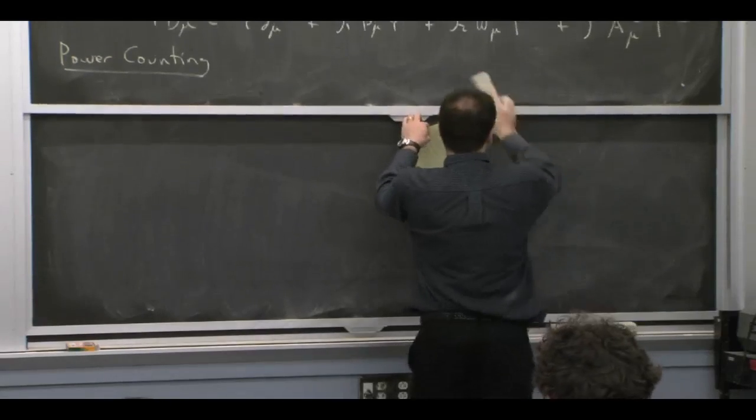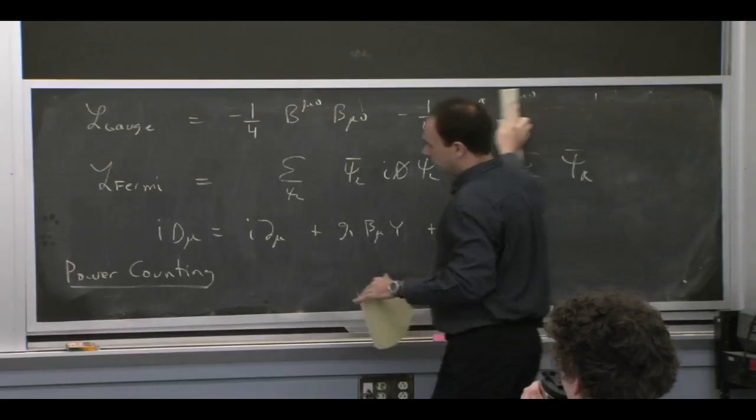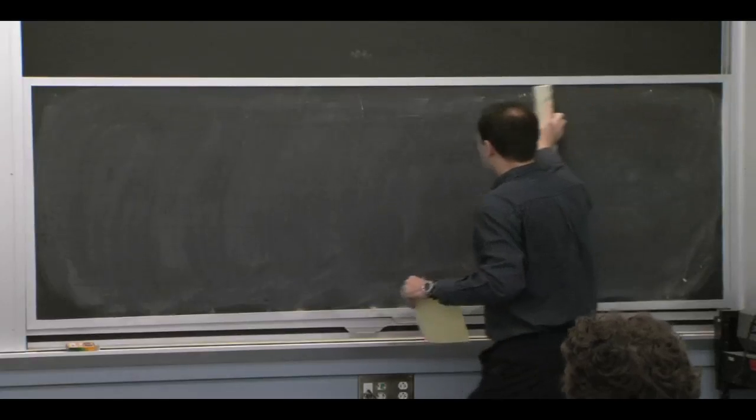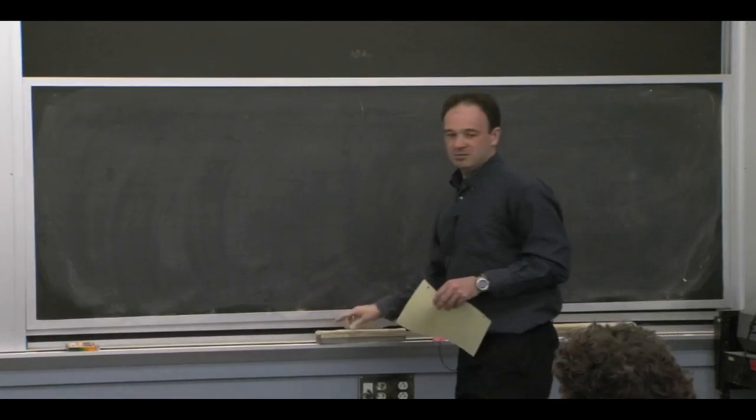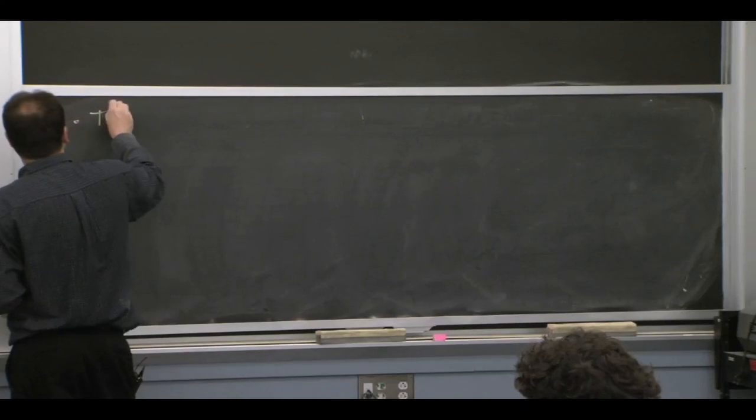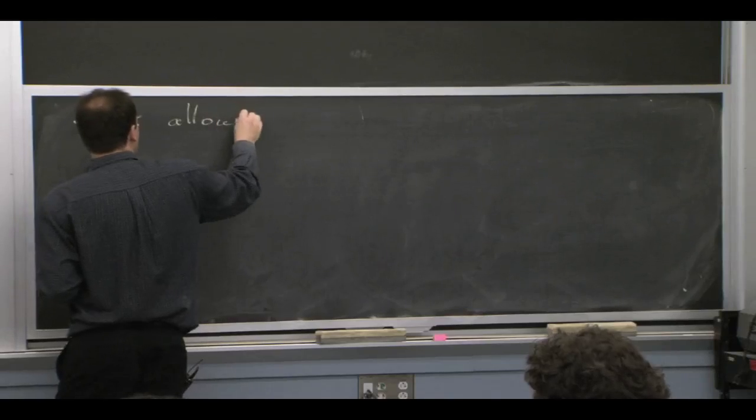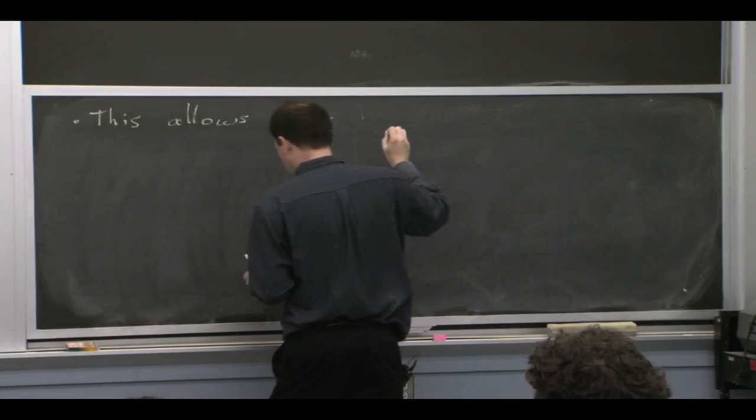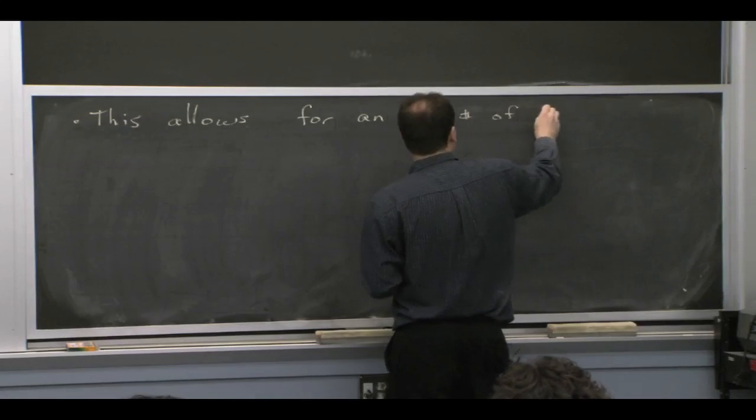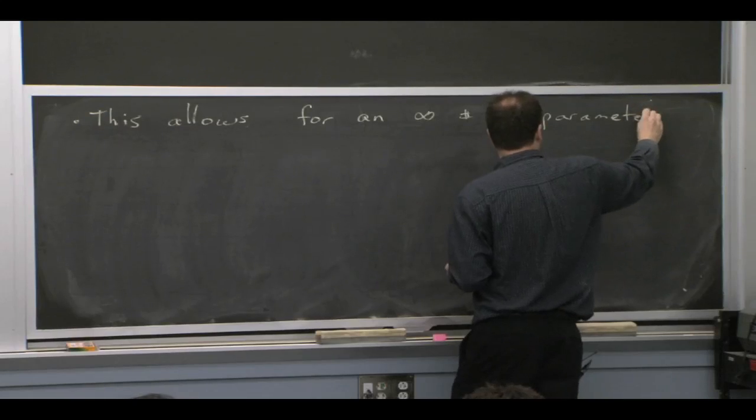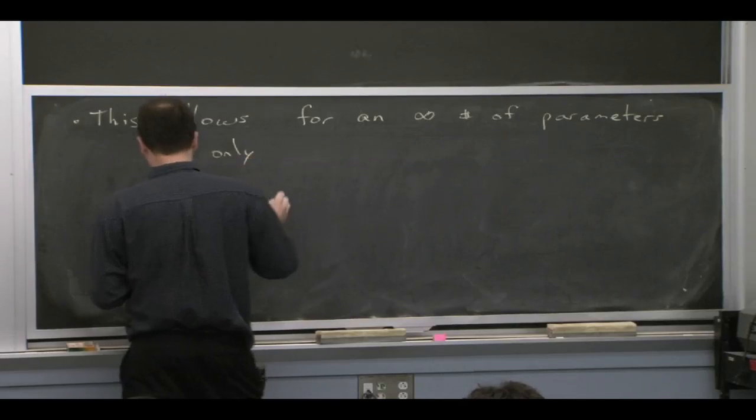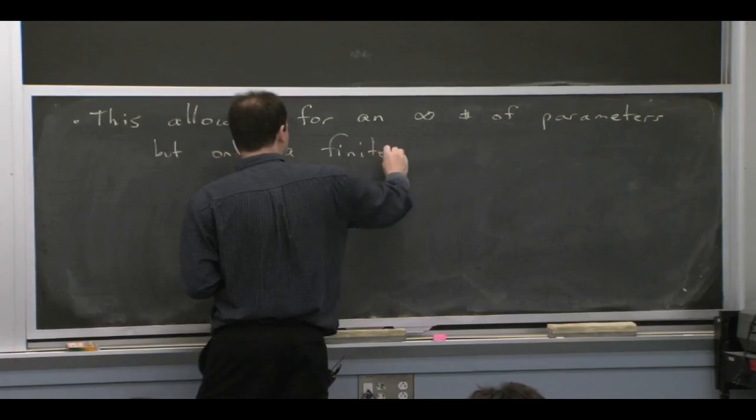So it could be that you do some calculation, you encounter some divergences, but if they're higher order in the expansion than what you need, and you have a power counting that tells you that, they would be absorbable into some operators that you haven't even written down, you can just drop them. So this definition allows for an infinite number of parameters that are needed, for example, for normalizability, but only a finite number at some fixed order.